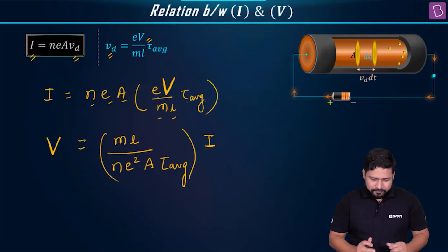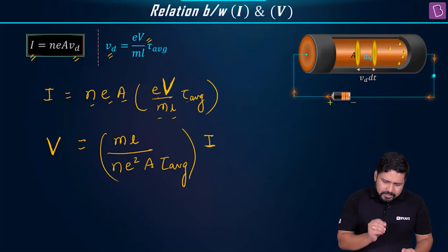Let's analyze this as well. If we try to analyze what we have got, we arrived at the same expression. Let's look at this expression properly. You have M, which is obviously mass of an electron, which is obviously constant. L is the length of the conductor. Let us say we are not changing the length. It's fixed.